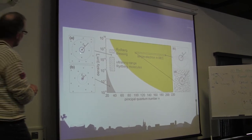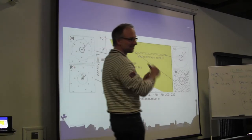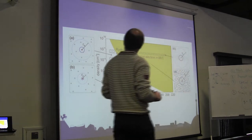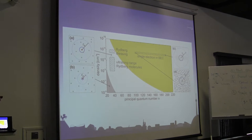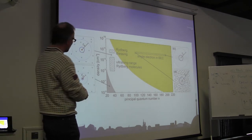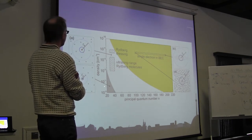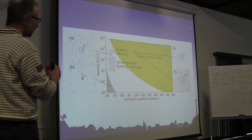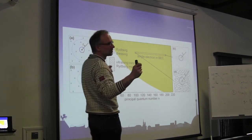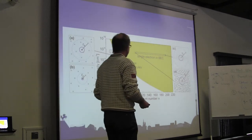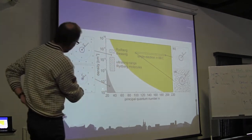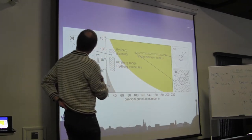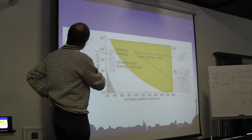The Rydberg excitation itself has a size, which is the blue circle here, which is always smaller than the other length scale we have, namely the blockade radius — the radius given by the strong interaction between Rydberg excitations. In the lower left corner, for small principal quantum numbers and small densities, the Rydberg orbit and the blockade radius are smaller than the inter-particle spacing, so this is just normal excitation without interesting physics. If you cross this border, the blockade radius starts to become larger than the inter-particle spacing, and you get interesting physics due to the interaction between Rydberg atoms.